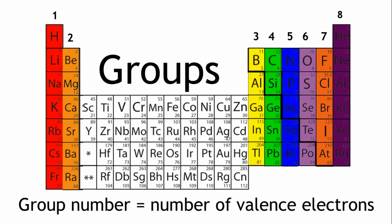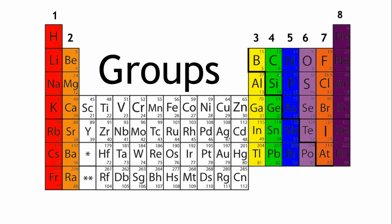The number of electrons in the outer shell governs elements' reactivity, which is why elements in the same group have similar properties. The group number can tell you how many electrons are in this shell.